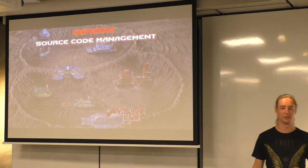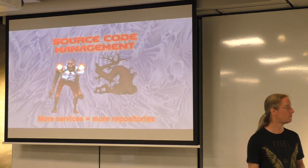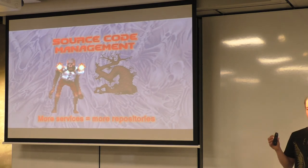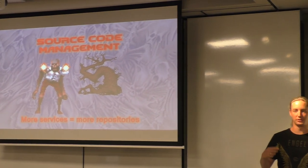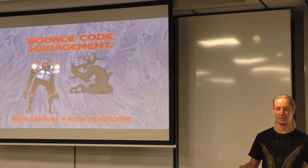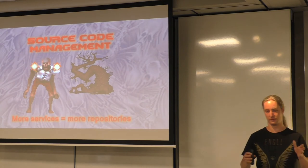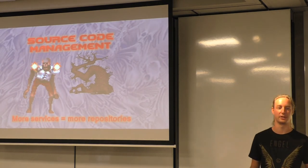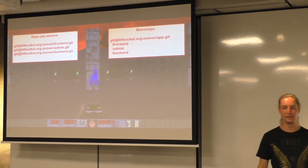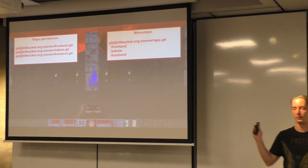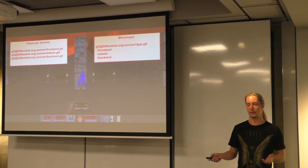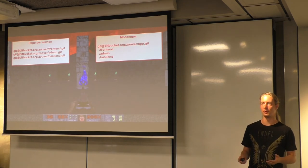The first thing you will hit is source code management. More services means more repositories, more code where you're duplicating code because you don't want all your services depending on a common library — that won't be microservices because you'll end up deploying everything whenever you change the common library. So the two options for managing really independent components are: a repository per service, or a monorepo.